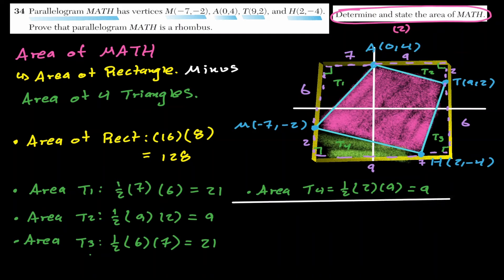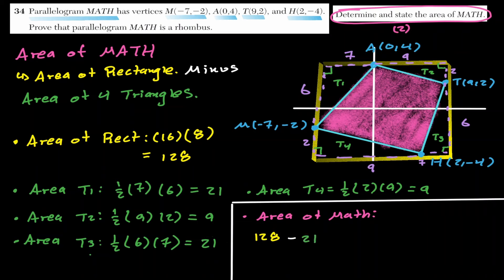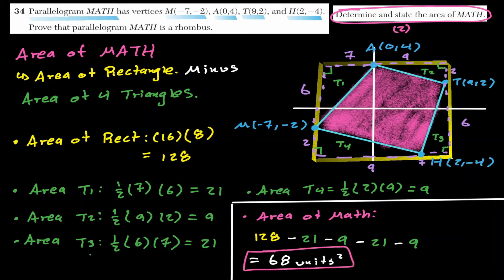The area of rhombus MATH = 128 − 21 − 9 − 21 − 9 = 68 square units.